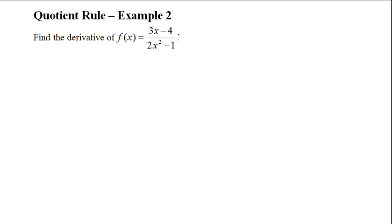This is another example of how to use the quotient rule when taking the derivative of a quotient. The question reads: find the derivative of f(x) = (3x - 4)/(2x² - 1).